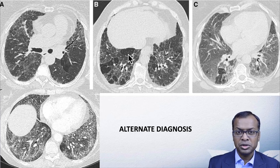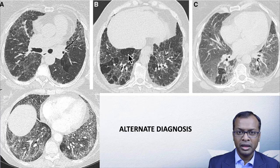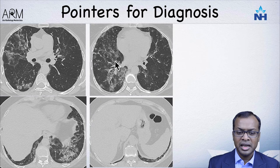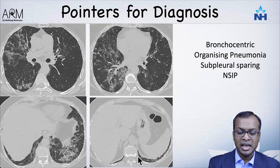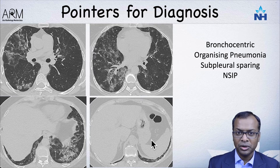If you can place a case into these broader categories you have done most of your job, because you can then discuss as part of a team and come to a final diagnosis. There are a few scenarios to be careful about: when you see bronchocentric involvement and patchy areas of ground glass opacity, think in terms of organizing pneumonia, especially as part of NSIP — particularly when you see subpleural sparing of the lung parenchyma.